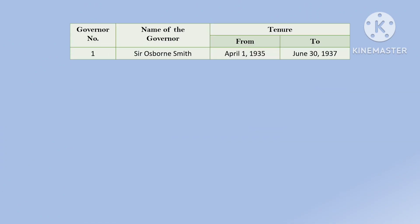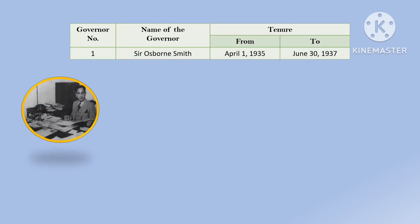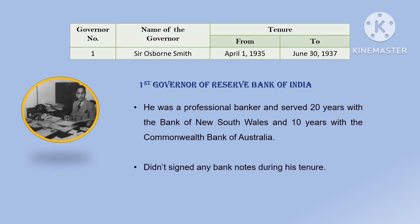Let us start with our first governor. The first governor of RBI was Sir Osborne Smith. His tenure was from April 1, 1935 till June 30, 1937. He was a professional banker and served 20 years with the Bank of New South Wales and 10 years with the Commonwealth Bank of Australia. He did not sign any banknotes during his tenure.